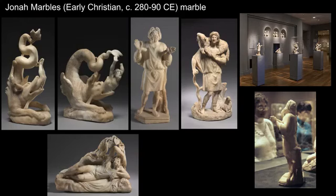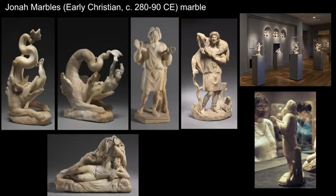As a first foray into exploring syncretism, let's talk about this group of objects called the Jonah Marbles. These five sculptures tell the story of Jonah, an Old Testament story that was part of both Jewish and Christian traditions. A quick summary: God commanded the prophet Jonah to go and preach to the city of Nineveh. Jonah didn't want to go, tried to run away by boat, ended up getting swallowed by a whale, spat up by the whale, prayed in gratitude, and then rested under a vine after preaching to Nineveh as instructed.